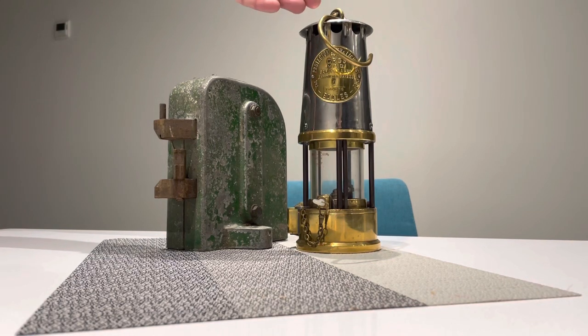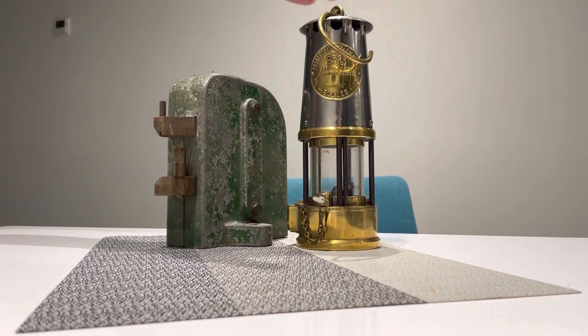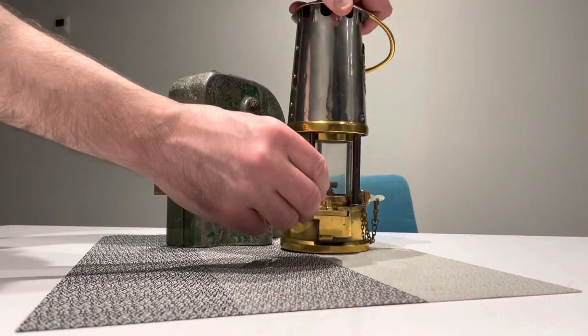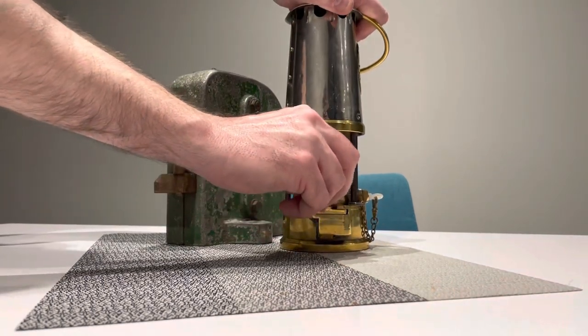Here we have a Protector GR6S miner's lamp which features a common magnetic lock to stop it from being opened underground.